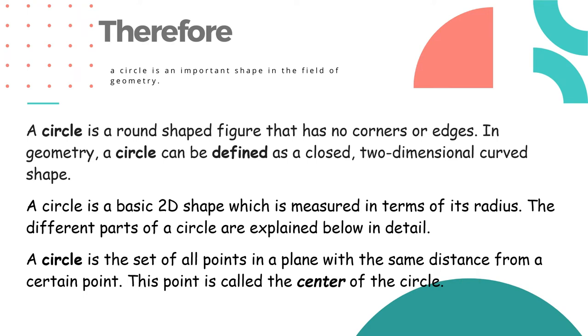A circle is a round shaped figure that has no corners or edges. In geometry, a circle can be defined as a closed two-dimensional curved shape. Circle is not a polygon because it has no corners or edges, but it is a closed figure, two-dimensional. A circle is a basic two-dimensional shape which is measured in terms of its radius. So one of the parts of the circle is a radius.